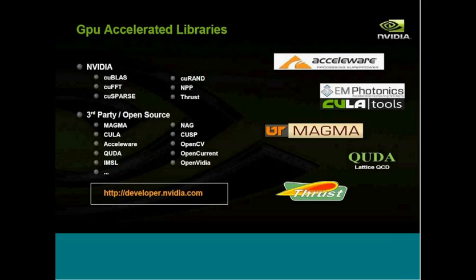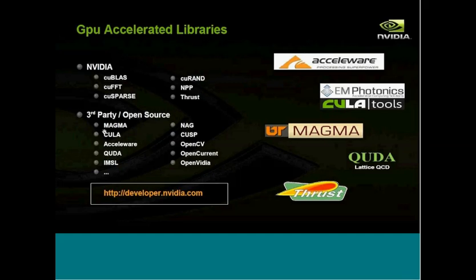We've shown some of the benefits of the CUBLAS library, but there are additional GPU-accelerated libraries available from NVIDIA for free, including Fast Fourier Transforms, Sparse Matrix Operations, and others. There are also many third-party and open-source GPU-accelerated libraries available — not only building-block libraries for dense and sparse linear algebra, but very domain-specific libraries for tasks ranging from reservoir simulation to the investigation of quantum chromodynamics. For more information on what's available, visit developer.nvidia.com.